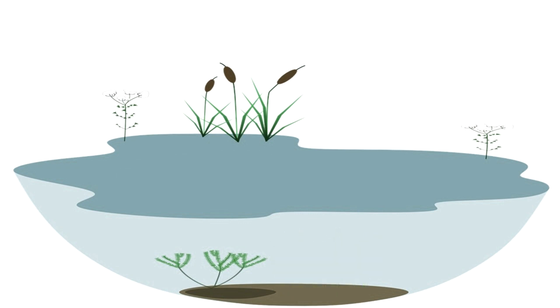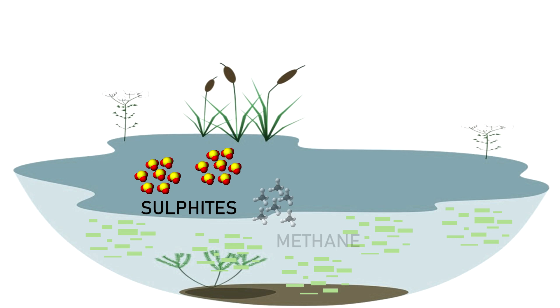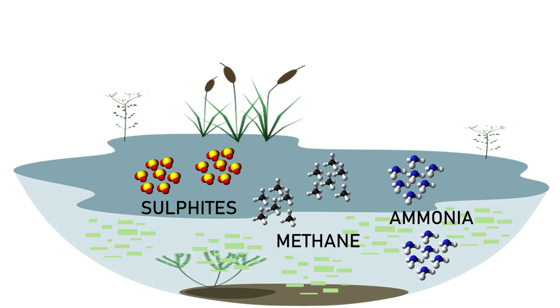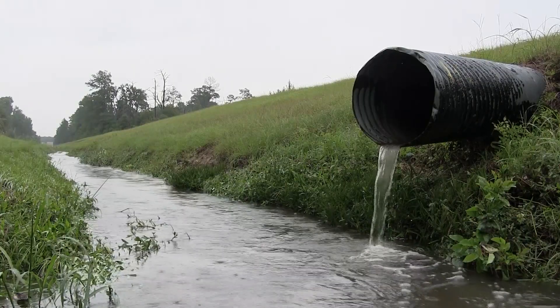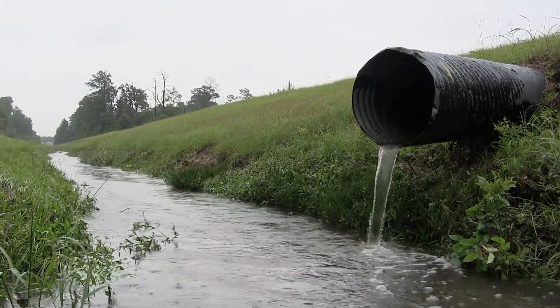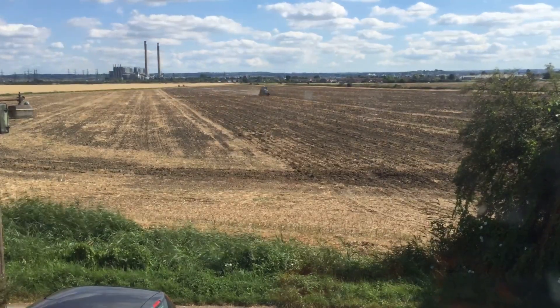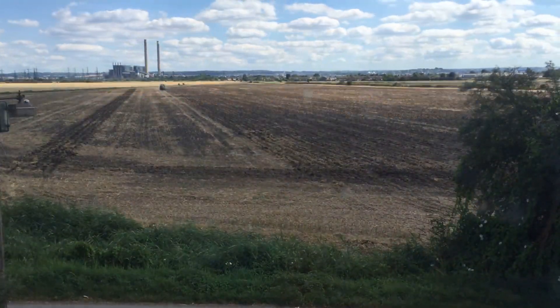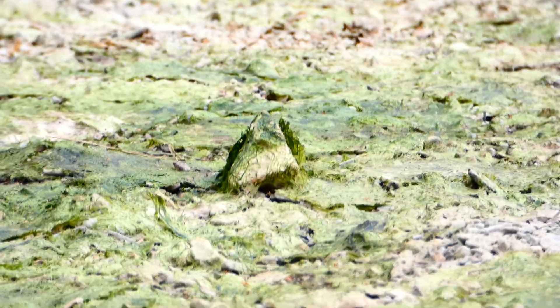All of this causes toxic bacteria and algae to survive, which in return release other pollutants such as sulphites, methane or ammonia, which drastically reduce biodiversity. The industrial effluents that are spilled into the aquatic environment and the domestic products that are poured into the sewage system, as well as fertilizers of agricultural use, contribute to the appearance of algae that are characteristic of eutrophication.